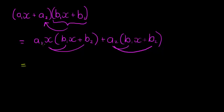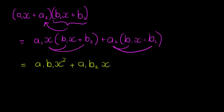Now we get A1 times B1, X times X — so X squared — then A1 times B2, A1 times B2 times X, and then here we have A2 times B1 times X, and then finally the last term is plus A2B2.